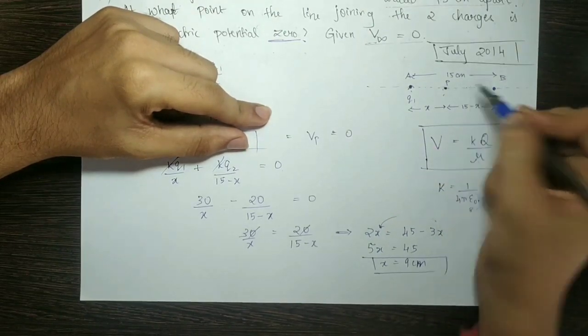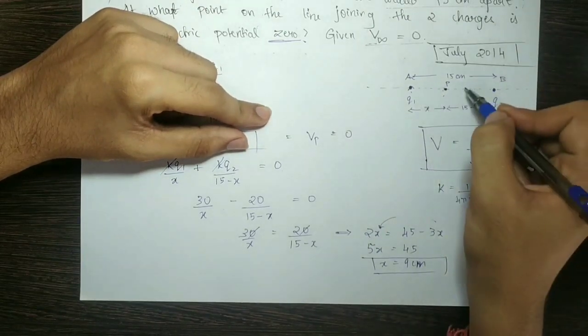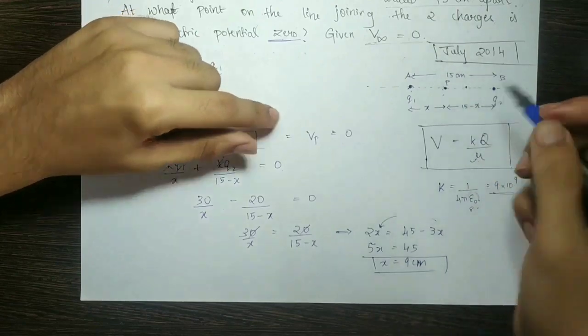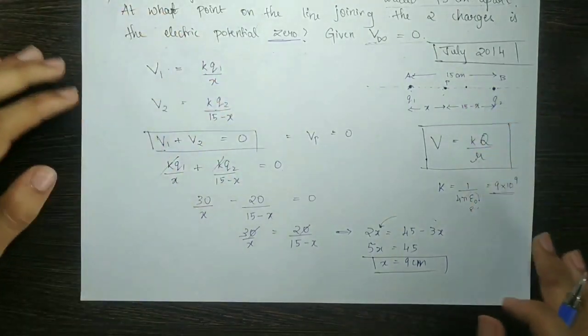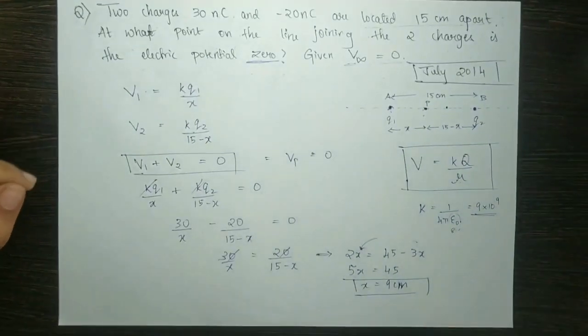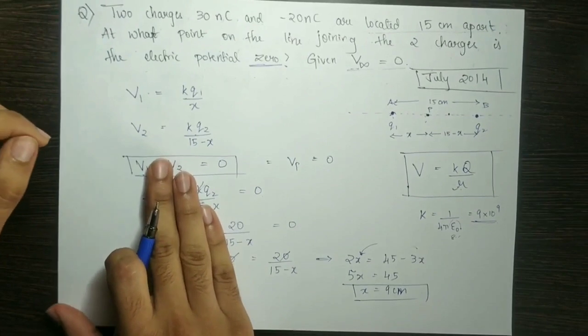At 9 centimeters from charge Q1, the net electric potential is zero. That is the answer for this question. Let's move on to the next question.